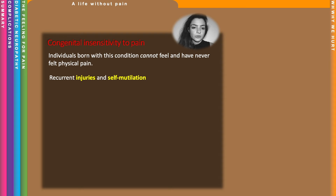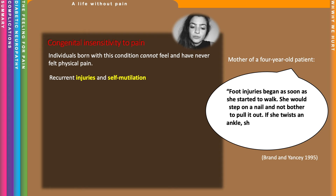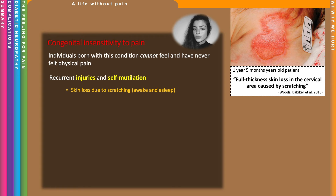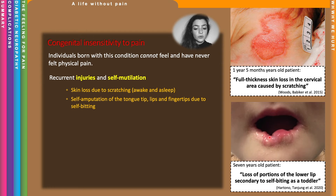For example, the mother of a four-year-old patient says foot injuries began as soon as she started to walk — she would step on a nail and not bother to pull it out. If she twists an ankle she doesn't limp, so it twists again and again. Here's another patient with skin loss due to scratching, and another with self-amputation of the lips, as self-biting frequently amputates the tongue tip, fingertips and lips of patients still in childhood.